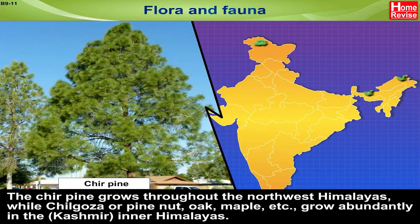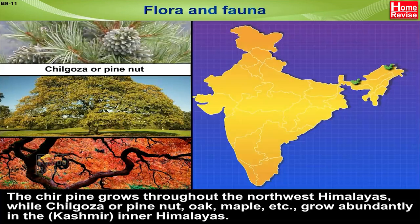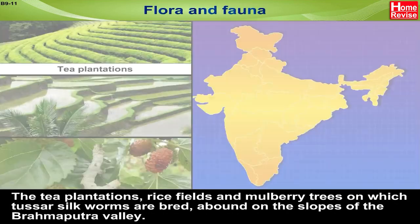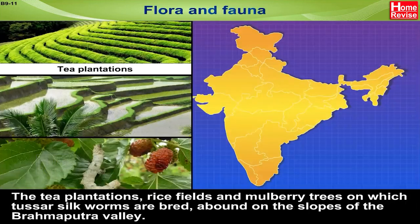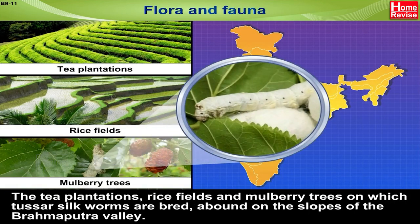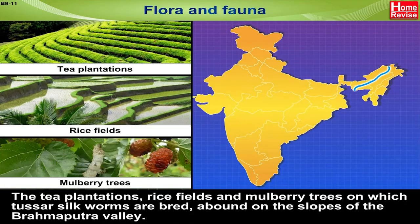The cheer pine grows throughout the northwest Himalayas, while chilgoza (pine nut), oak, and maple grow abundantly in the inner Himalayas, i.e., Kashmir. The tea plantations, rice fields, and mulberry trees on which tassar silkworms are bred abound on the slopes of the Brahmaputra Valley.